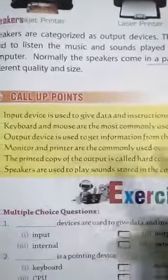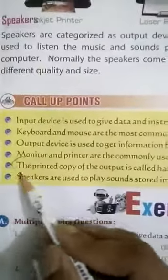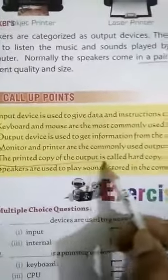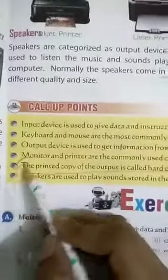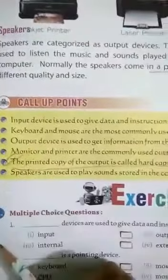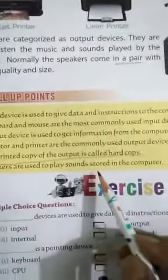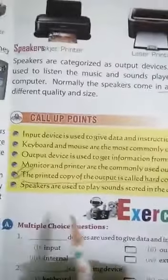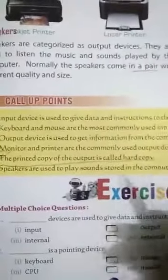Monitor and printer are the most commonly used output devices. The printed copy of the output is called a hard copy. Speakers are used to play sounds stored in the computer.